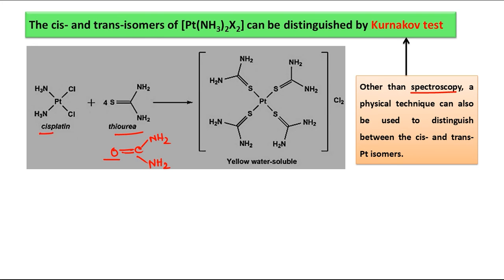For the cis complex, the same groups are on the same side — two ammonia groups are 90 degrees to each other, and the two Cl are also 90 degrees to each other, confirming it is the cis complex. For this complex, four thiourea molecules are required. All four ligands — two ammonia and two chlorine — will be replaced by four thiourea ligands. Thiourea is a neutral ligand, and NH3 is also neutral, but chloride Cl⁻ is an ionic ligand.